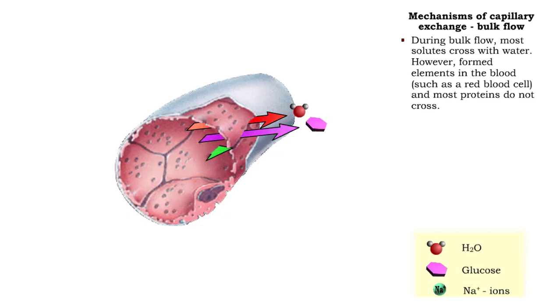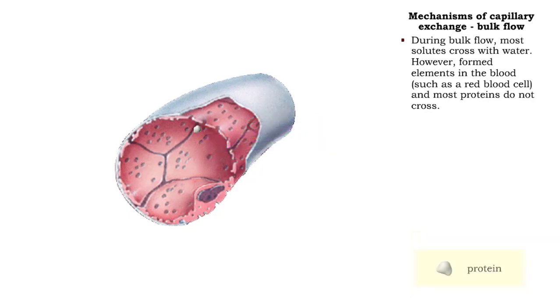Most solutes can cross with water. However, most larger proteins and formed elements in the blood, such as red blood cells, cannot pass through the fenestrations of the endothelial cell.